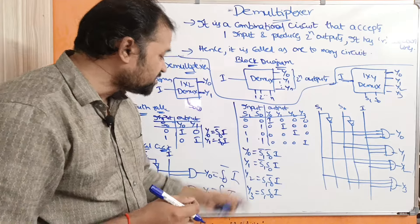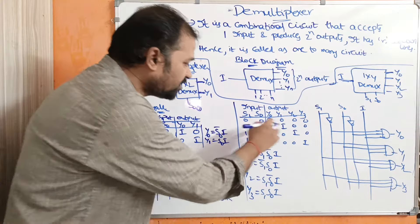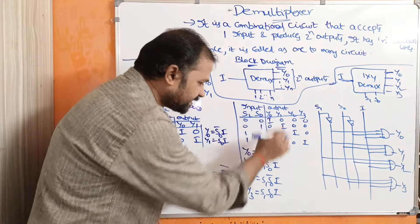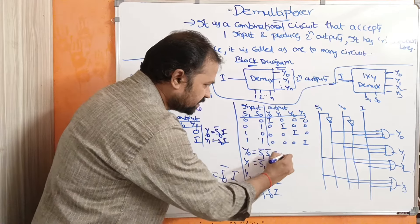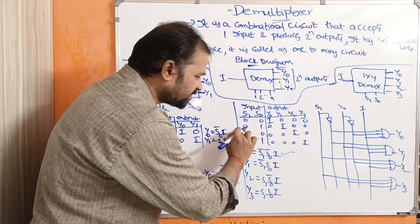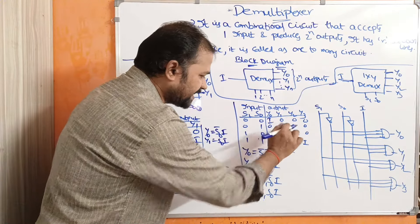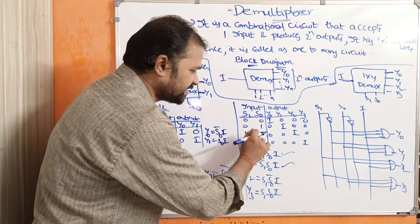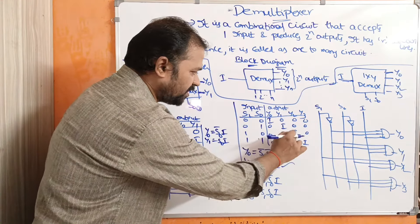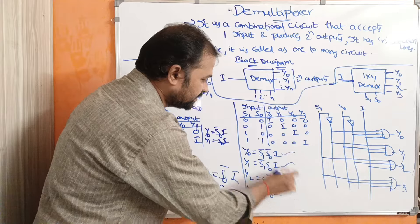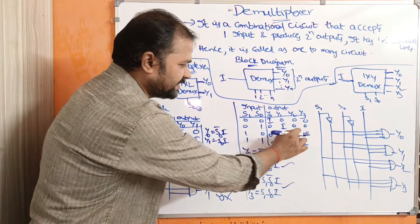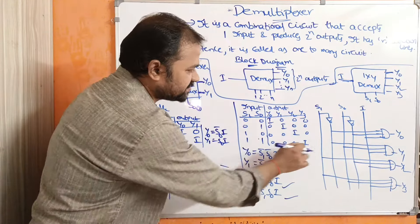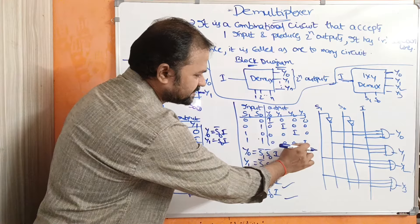Let us evaluate the boolean expressions. y0 = s1̄·s0̄·i. y1 = s1̄·s0·i. y2 = s1·s0̄·i. y3 = s1·s0·i.